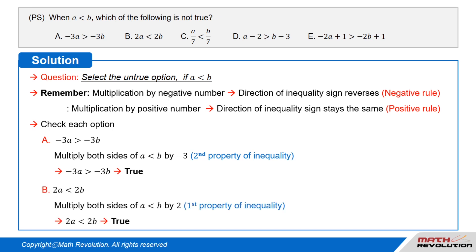Option B: 2 times a is less than 2 times b. Let us apply the first property of inequality, which is the positive rule. That is, when we multiply an inequality by a positive number, the inequality sign does not change. So if we multiply the given inequality a is less than b by 2, we get 2 times a is less than 2 times b. Thus this option is true.